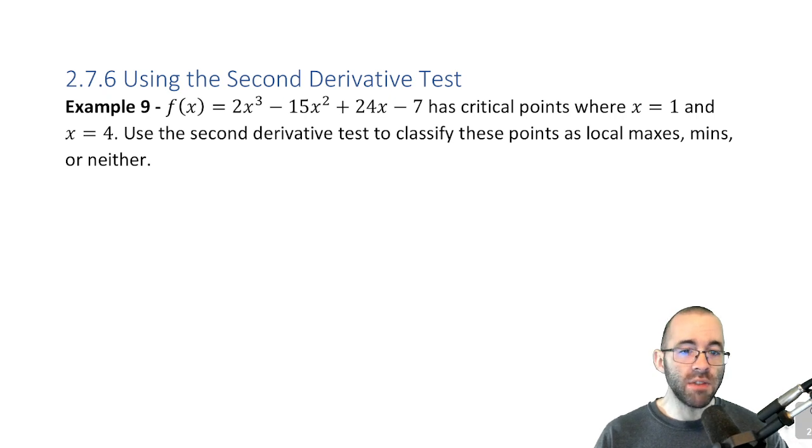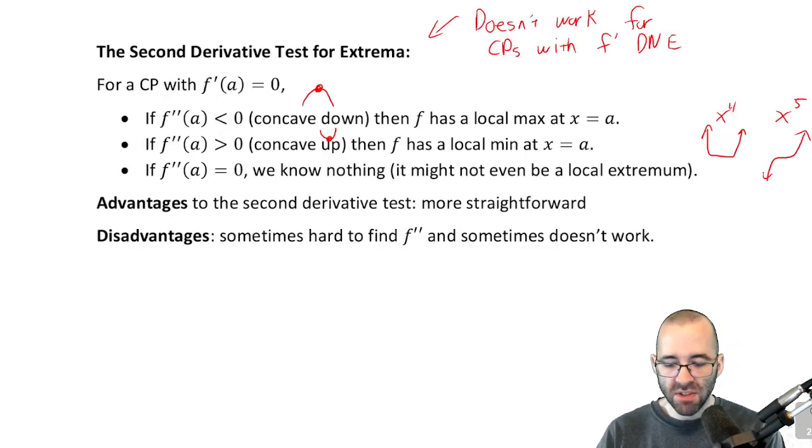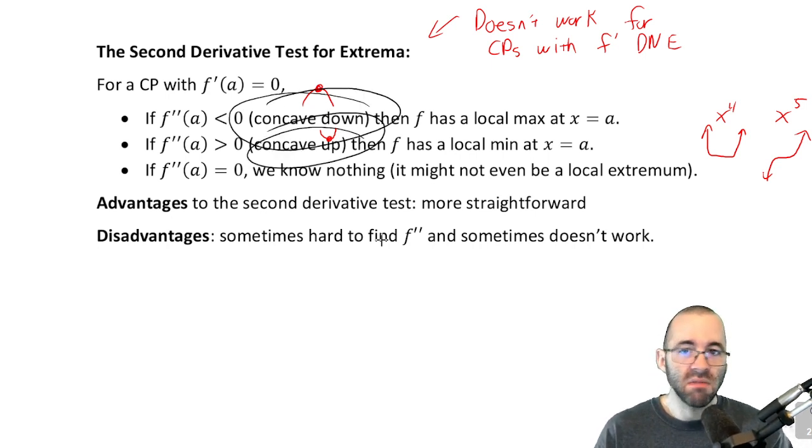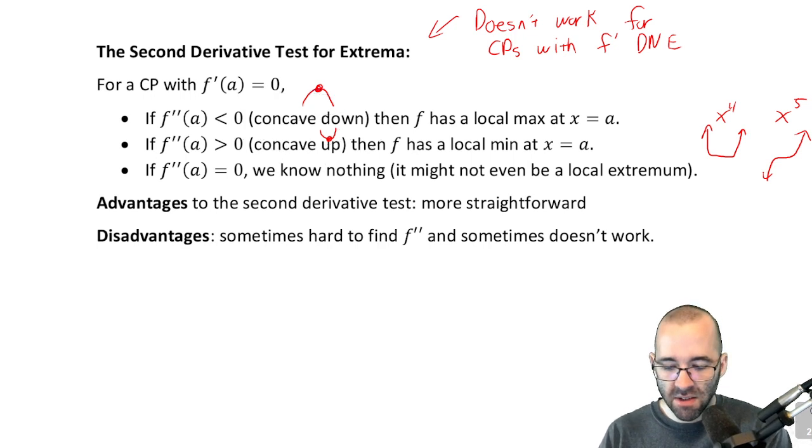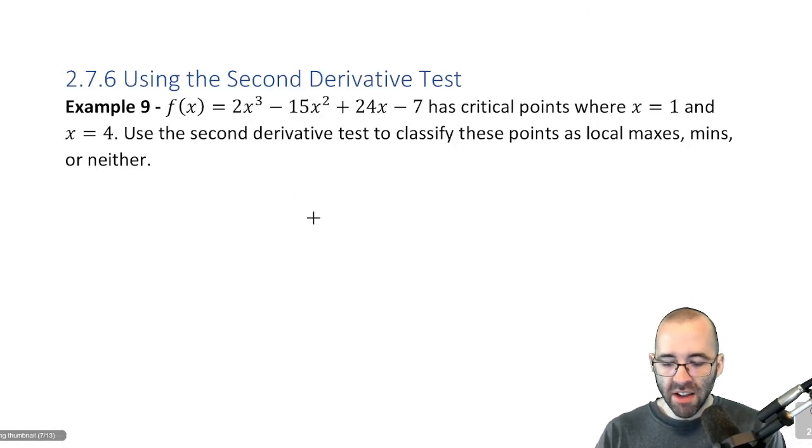So we need to find the second derivative. The second derivative test says, is the function concave down or concave up at that point? That gives us our answer. So let's find that.